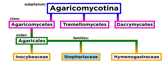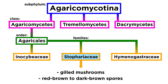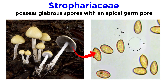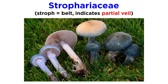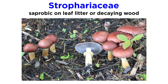Next, let's discuss the family Strophariaceae. These are gilled mushrooms that produce red-brown to dark-brown spores. Under a microscope, the spores have a glabrous or smooth surface with an apical germ pore. The gills are attached to the stipe. The Greek root 'stroph' means belt, which indicates the presence of a partial veil on many species in Strophariaceae. These mushrooms form in clusters and are saprobic, meaning they feed on dead organic matter like leaf litter or decaying wood.